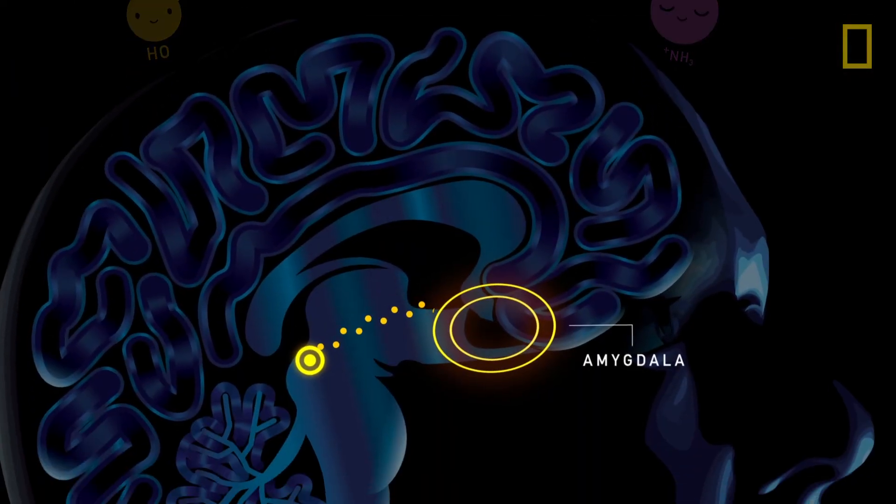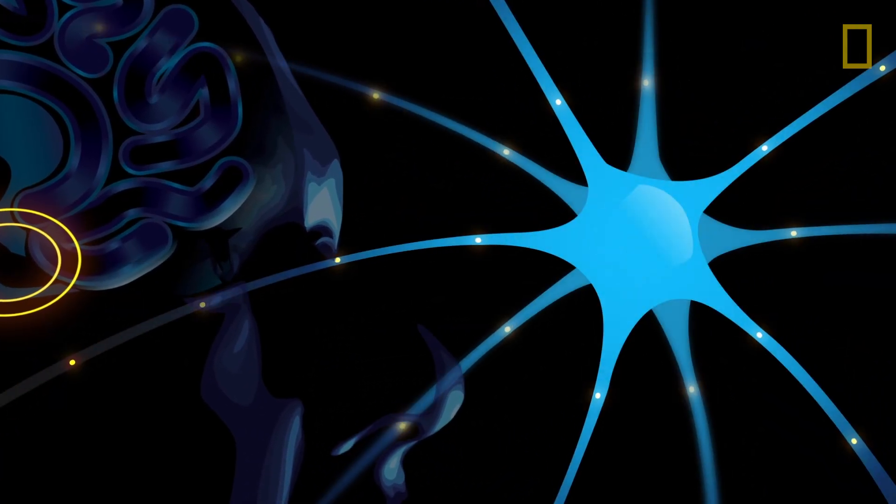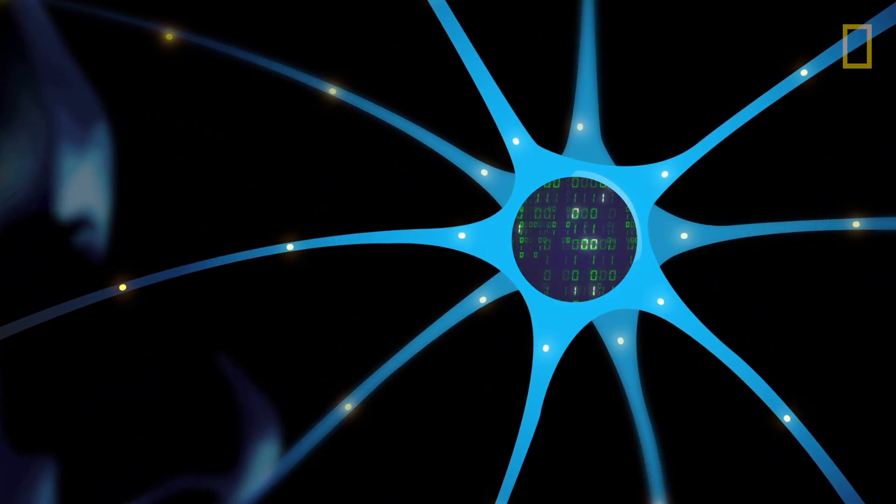Then there's the amygdala, where the dopamine causes neurons here to be stimulated by learned emotional responses, like rich, pleasure-coded memories.